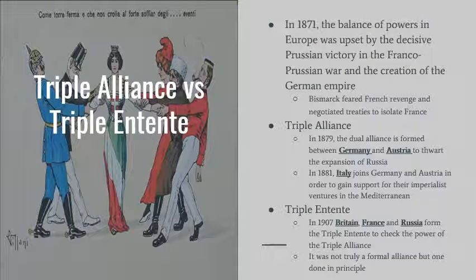In 1871, the balance of power in Europe was upset by the Franco-Prussian War, in which Prussia won a decisive victory and created the German Empire. Otto von Bismarck feared French revenge and negotiated treaties to isolate France. In 1879, the Dual Alliance formed between Germany and Austria to thwart Russian expansion. In 1881, Italy joined to form the Triple Alliance. In response, in 1907, Britain, France, and Russia formed the Triple Entente to check the power of the Triple Alliance — not a formal alliance, but one done in principle.